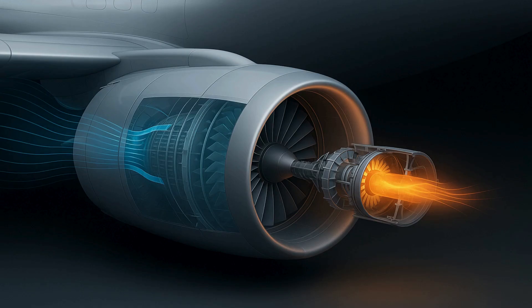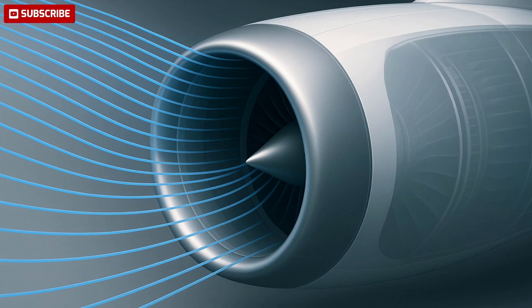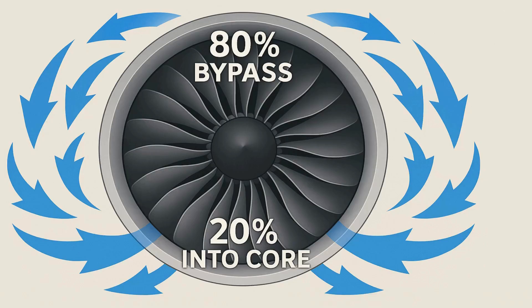Every time you board a jet, you place your trust in a single machine that turns air and fuel into enough force to lift hundreds of tons of metal into the sky. It begins by drawing in air at high speed through a carefully shaped inlet, slowing it just enough to avoid shockwaves. That air then meets a giant fan whose twisted blades act like wings, splitting the flow into two streams. Most of the air bypasses the core to add cool thrust, while the rest moves deeper into the engine. In just seconds, this steady flow of air sets the stage for a complex dance of compression, combustion, and expansion that creates continuous power.